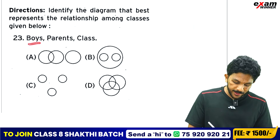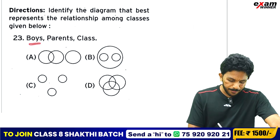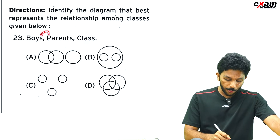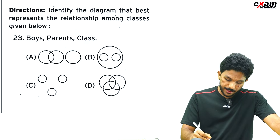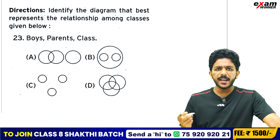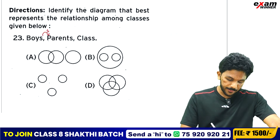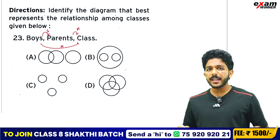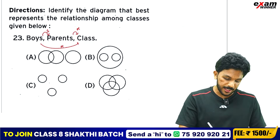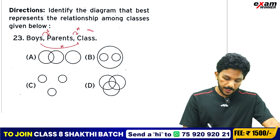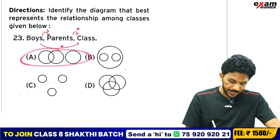The second example: Boys, Parents, Class. Boys and parents — some boys are parents. Parents are not in class. Boys are not in class. Then boys have parents. The correct answer is A.